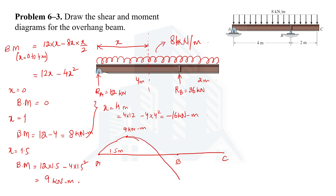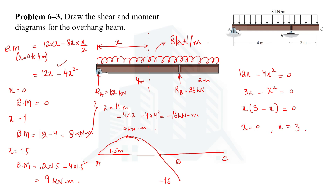To find where the bending moment is zero in the A-B portion, we set 12x − 4x² = 0. Dividing by 4: 3x − x² = 0, factoring out x: x(3 − x) = 0, giving x = 0 or x = 3. So the bending moment is zero at x = 3 m from A (in addition to x = 0 at point A).